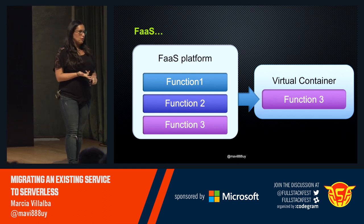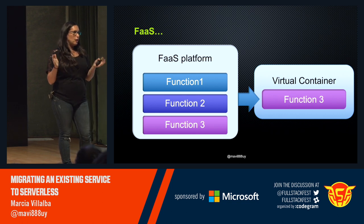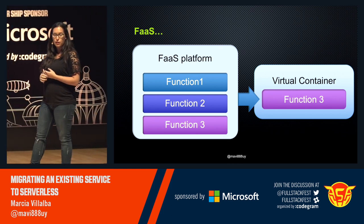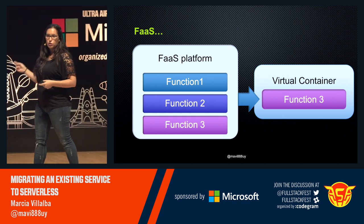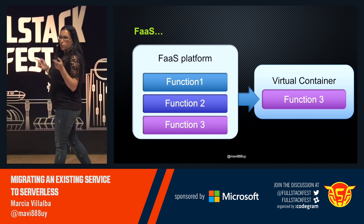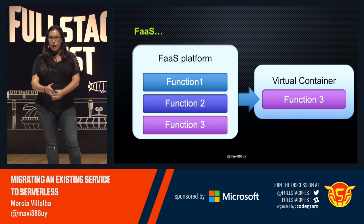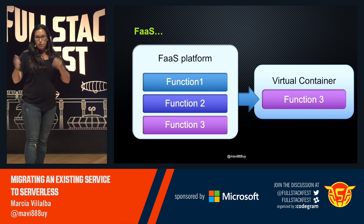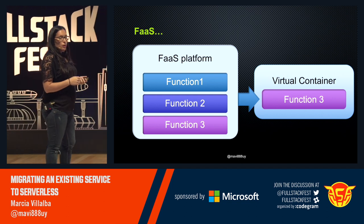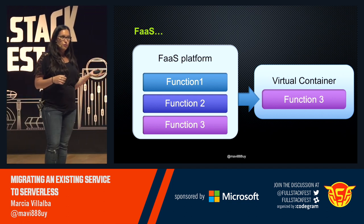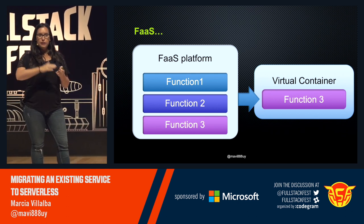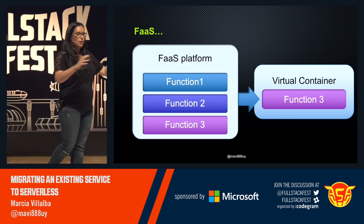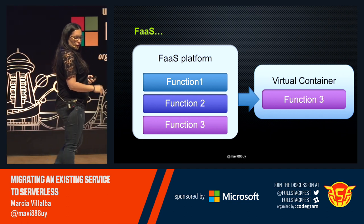Two important things: first, your function should be short-lived. Lambda, the platform from AWS, has a five-minute limit — it cannot execute for more than five minutes. Second, your function needs to be stateless, because when you have a hundred requests coming at the same time, the platform launches a hundred parallel virtual containers running this function. If you have state, you'll have a mess. Whenever you deploy a new version, the platform will spawn it in the next virtual container, so spreading new versions is out of the box.